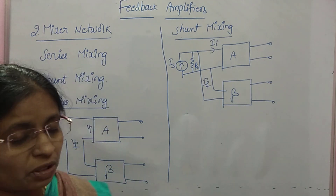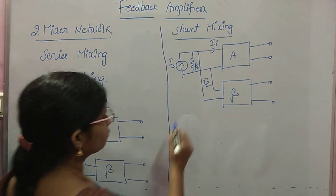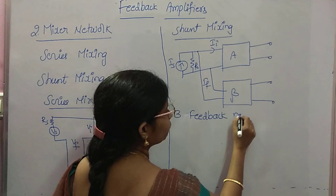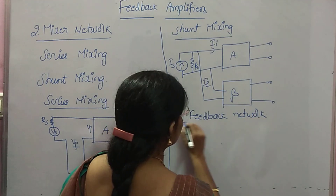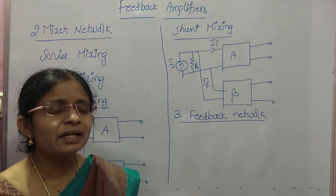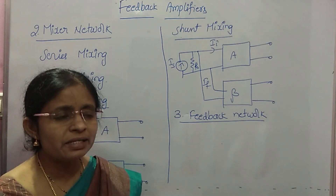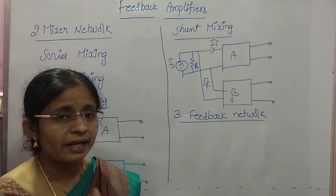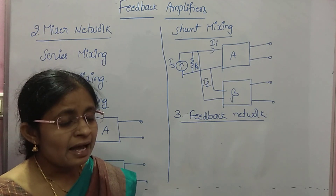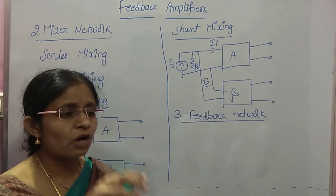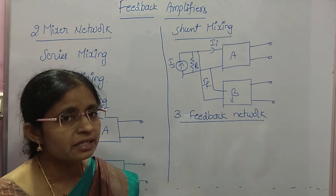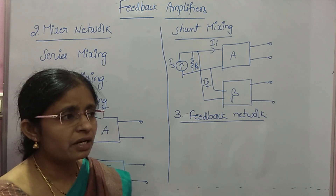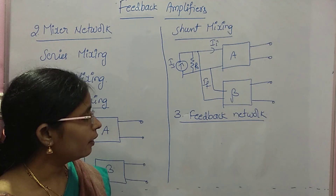The third network is the feedback network. Your feedback network generally consists of only linear elements — RLC. But in our amplifier concept, your feedback network consists only of a resistive circuit. In tuned amplifiers and oscillator circuits, the feedback network consists of LC elements — frequency selective or frequency sensitive elements. But in the case of amplifiers, the feedback network consists of only resistors.